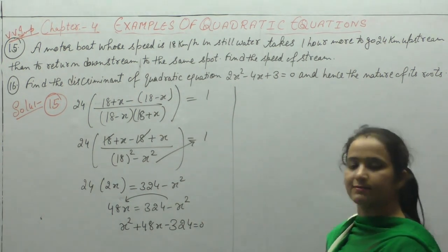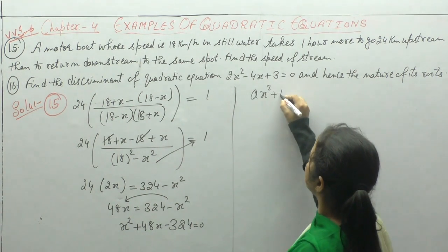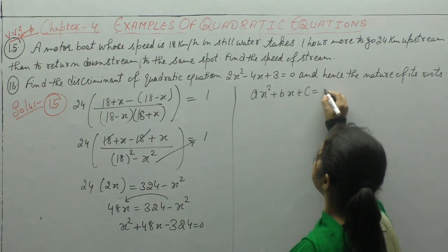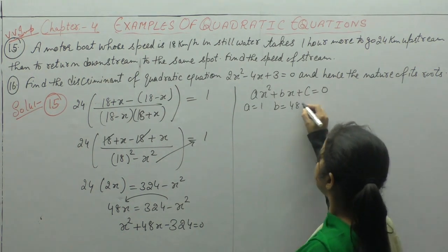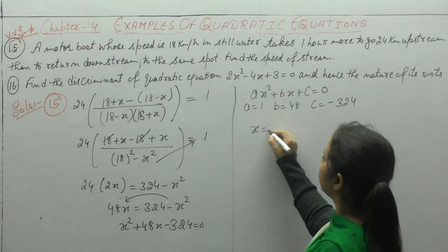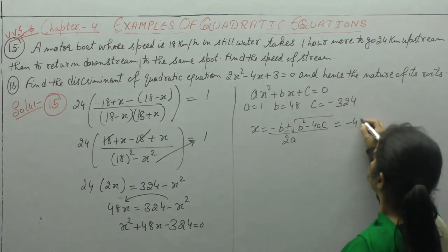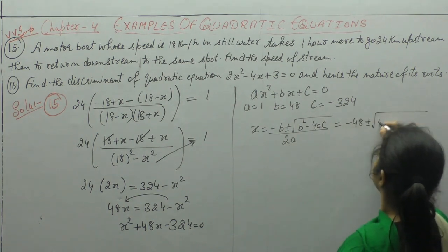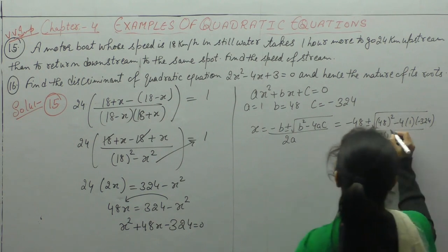x squared plus 48x minus 324 equals 0. Comparing with the general equation Ax squared plus Bx plus C equals 0: A is 1, B is 48, and C is minus 324. By applying the quadratic formula, find the value of x: x equals minus B plus or minus square root of (B squared minus 4AC) upon 2A.